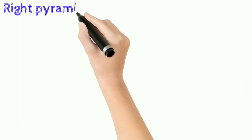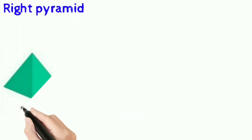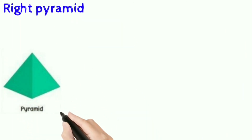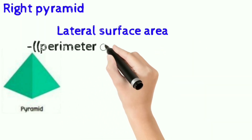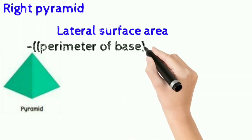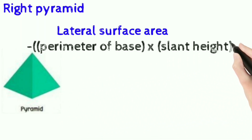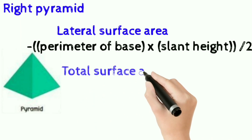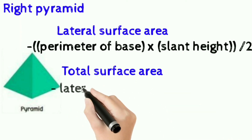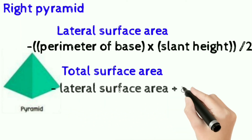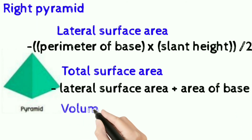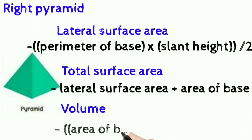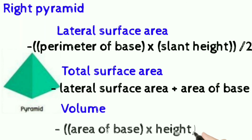Right pyramid: lateral surface area is perimeter of the base into slant height divided by 2. Total surface area is lateral surface area plus area of the base. Volume is area of base into height of the pyramid divided by 3.